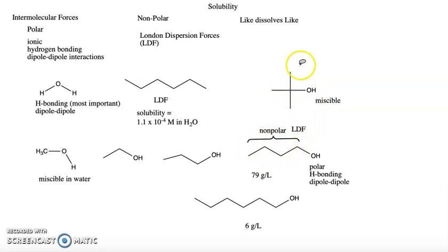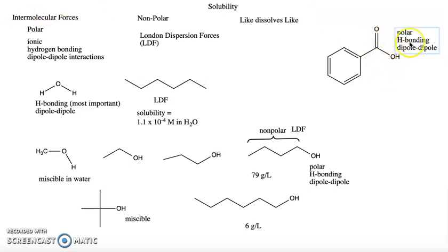So branching increases solubility in water for hydrophobic molecules. I also want to talk about molecules that sort of have regions of mixed polarity, similar to what I did down here, but in a little more detail. And for that, I want to look at benzoic acid. If we focus on benzoic acid, we've got a polar region over here in this carboxylic acid portion. So this is polar H-bonding, dipole-dipole, and we've got a non-polar region over here.